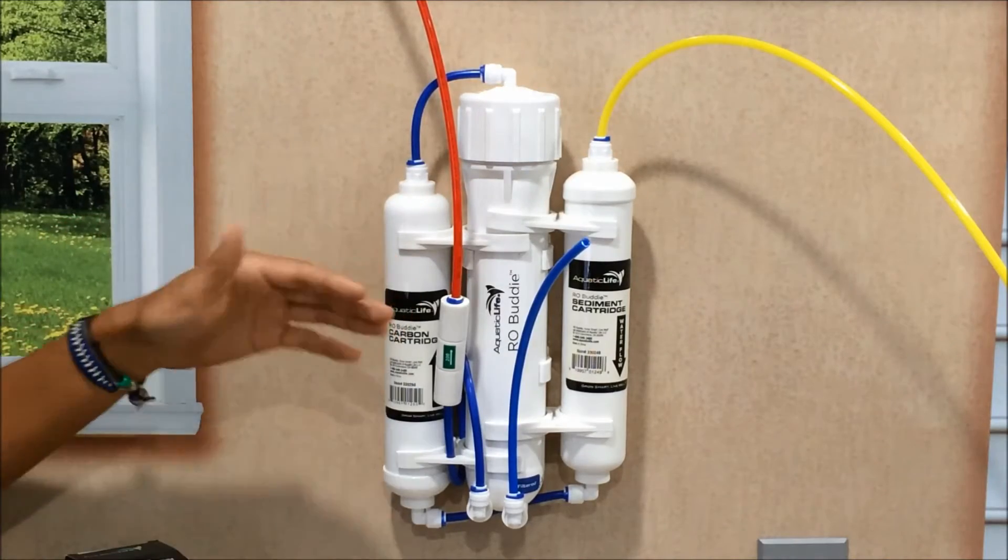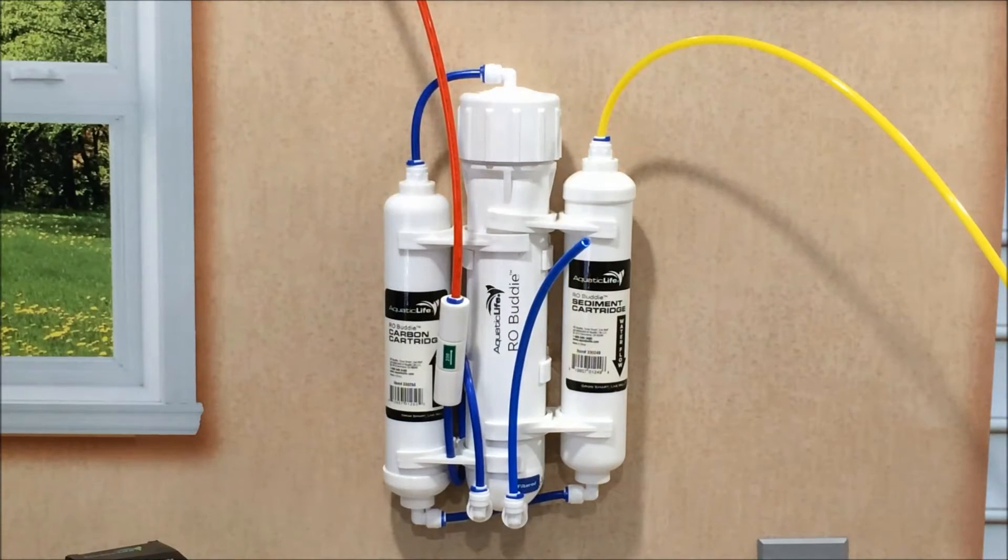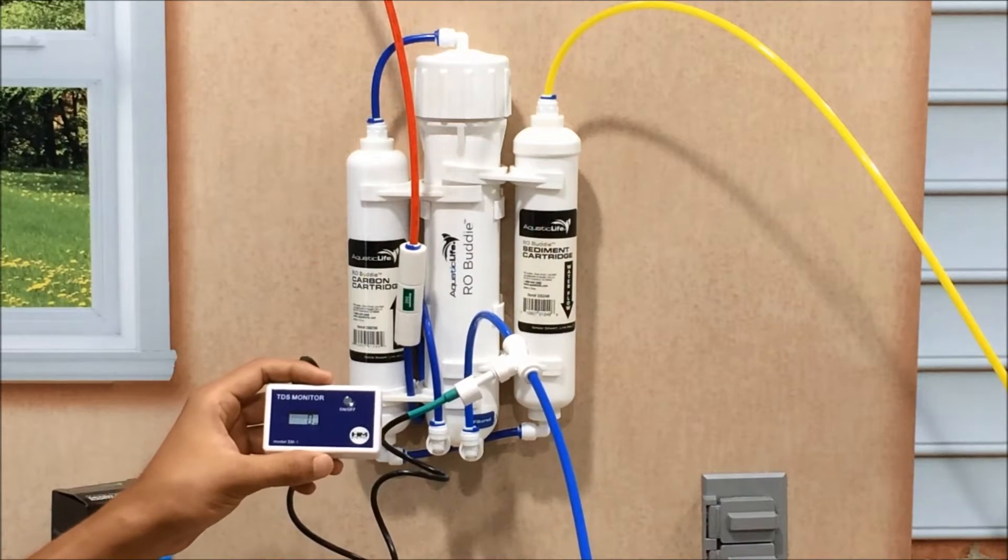The triple, if you had a DI cartridge, would allow you to measure your supply, your filtered, and the water coming out of your DI cartridge. Here's an example of the single TDS meter hooked up.